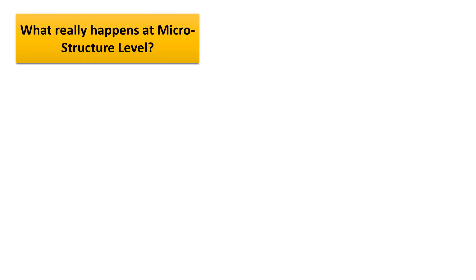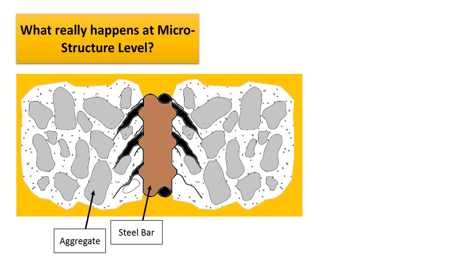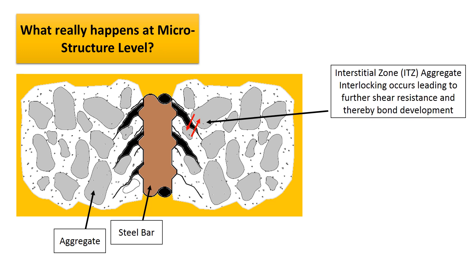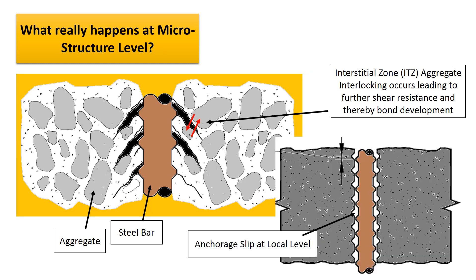Another explanation at the microstructure level of bond between concrete and steel is shown here. The aggregate interlocks the steel ribs, developing shear resistance — termed the ITZ (interfacial transition zone) aggregate interlocking. This is believed to be the major cause for bond development between concrete and steel. A loss of anchorage occurs at the local level, represented as the breaking of the interlocking pattern as shown in the figure.